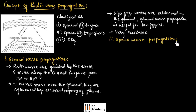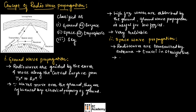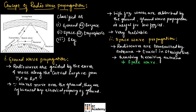Now, let us understand space wave propagation. When radio waves are transmitted by an antenna, these radio waves travel in a straight line, directly reaching the receiving antenna. This process is known as space wave propagation.